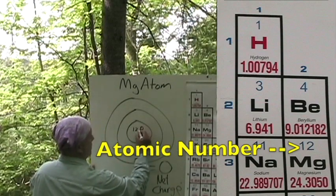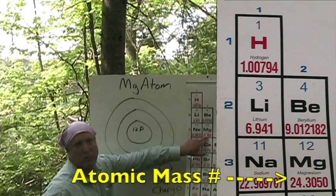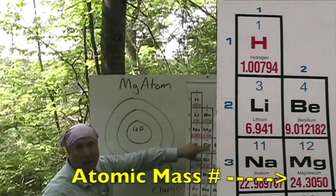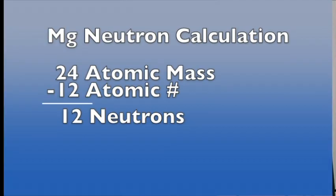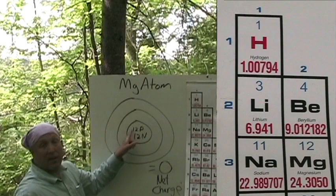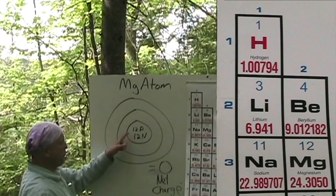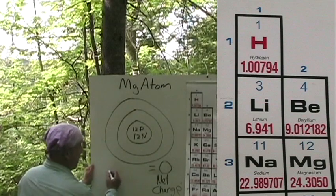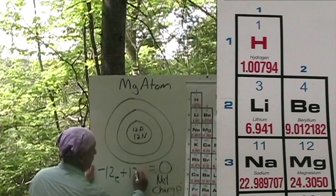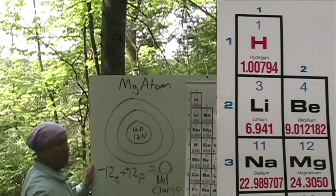So we have 12 protons. We take 24.3 — we leave the .3 behind because it is below .5 — so we have 24. 24 minus 12 is 12 neutrons. So let's go ahead and construct our formula. If we have 12 protons, that means we have 12 electrons with the negative charge: negative 12 e⁻ plus positive 12 p⁺ for protons.